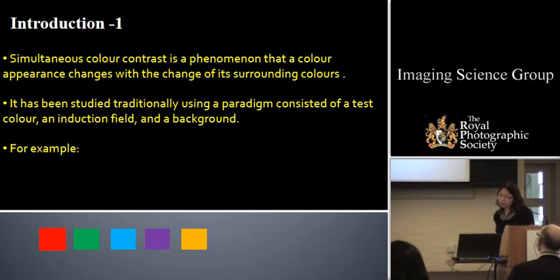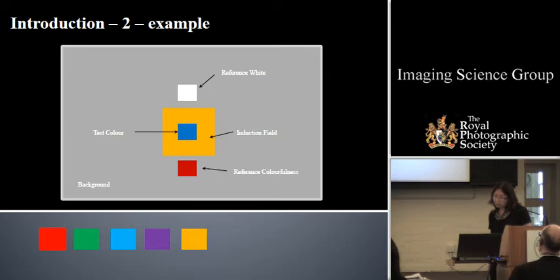The simultaneous color contrast is a phenomenon that color appearance changes with the change of surrounding color. It has been studied traditionally using a paradigm, a concept of test color, an induction field, and a background. For example, it is like this. The test color and induction field, reference white and reference colorfulness.